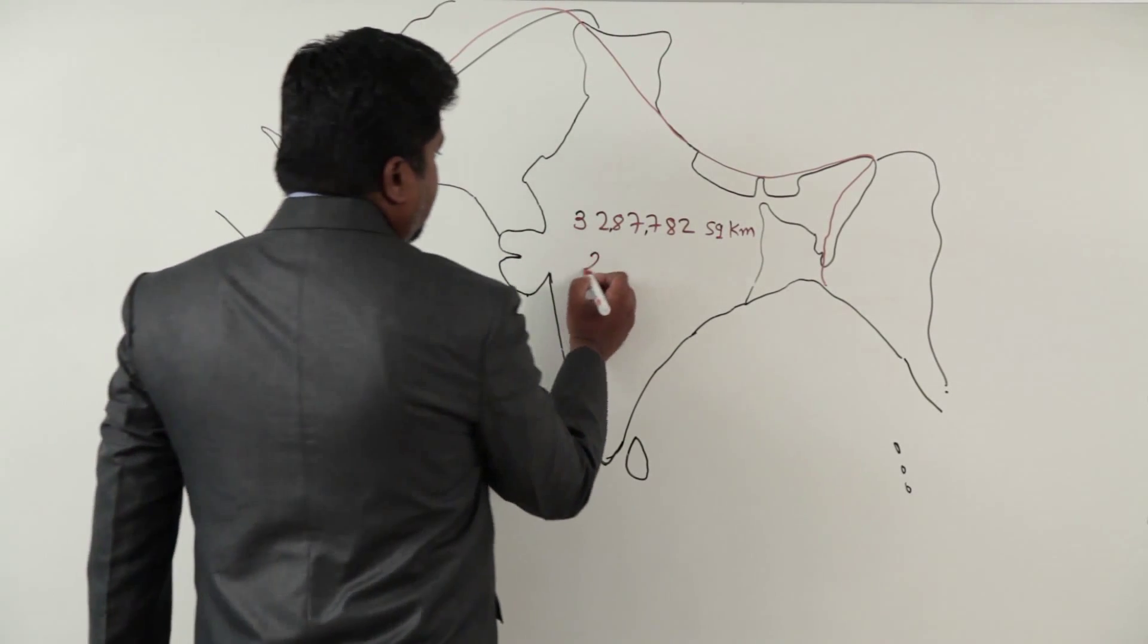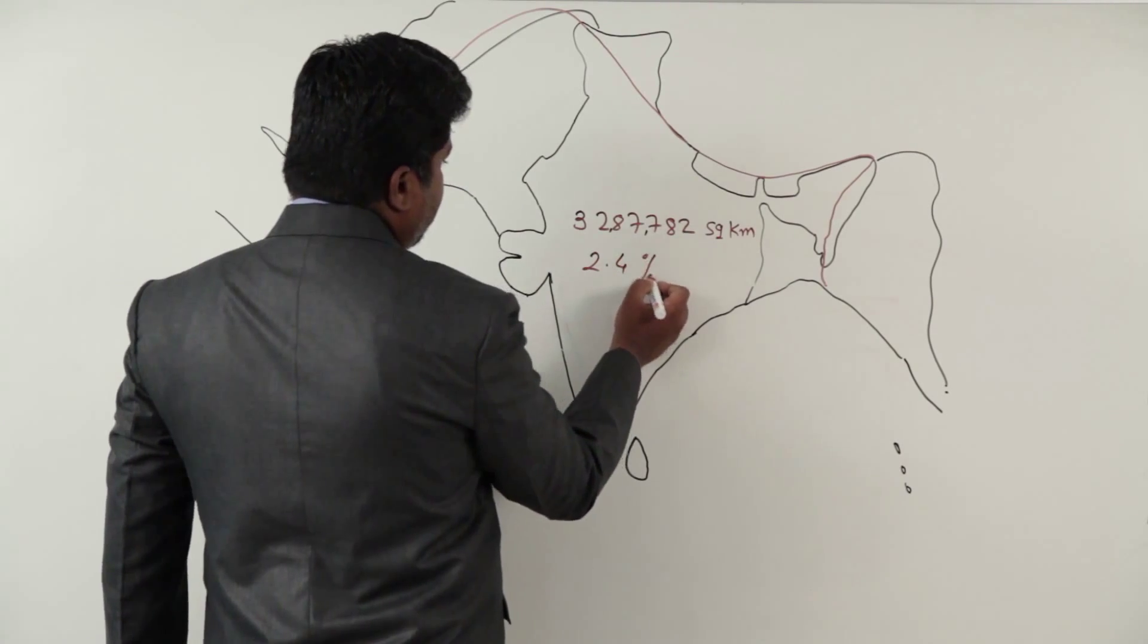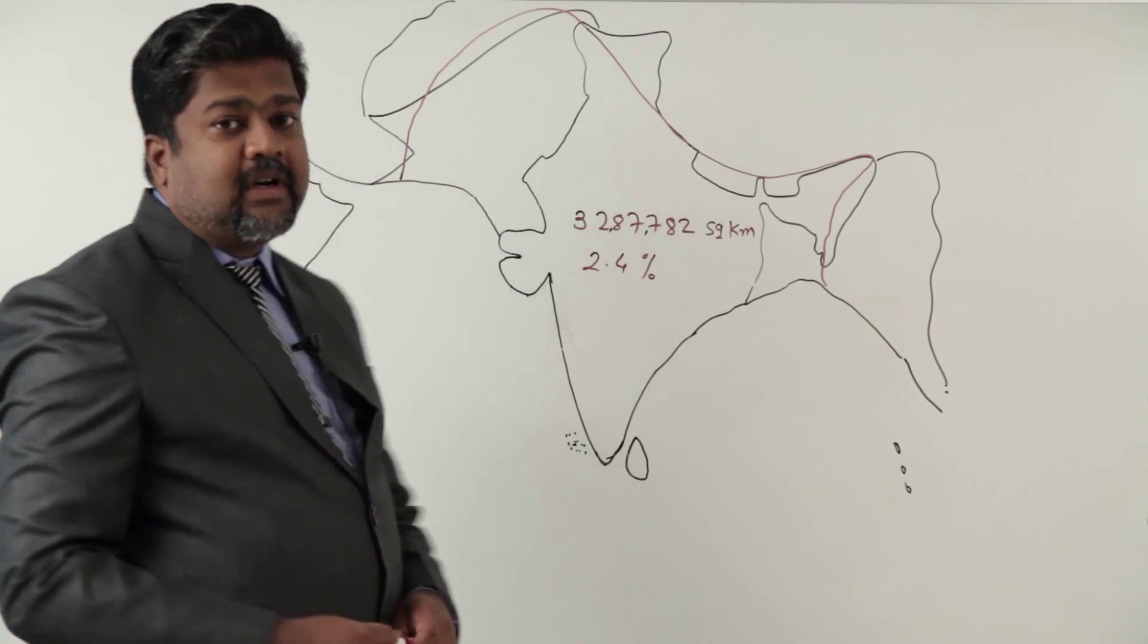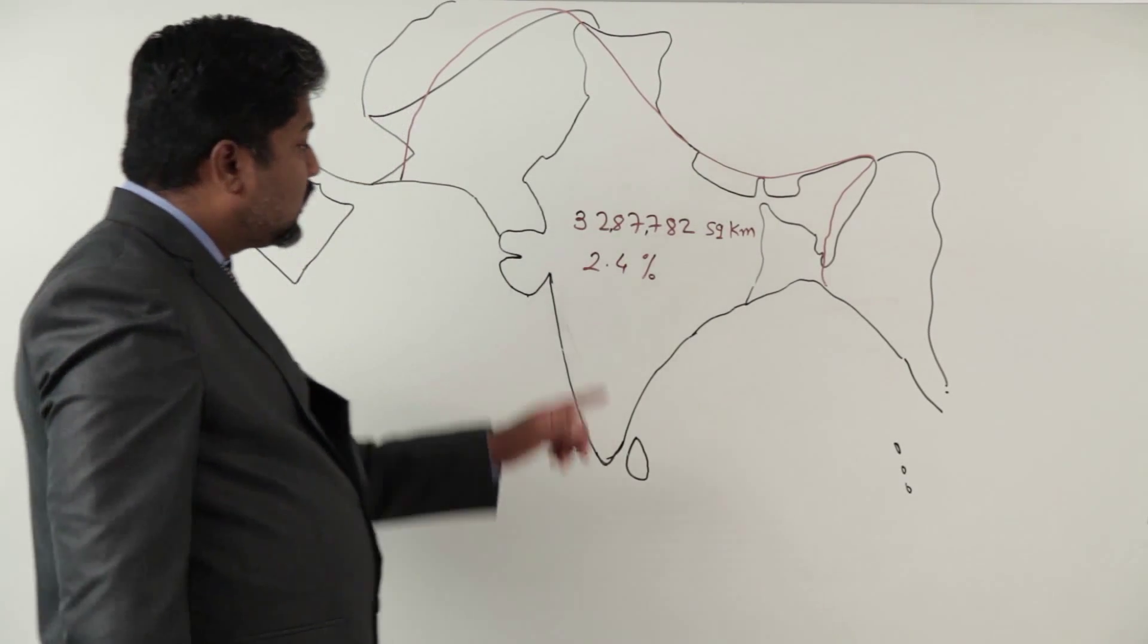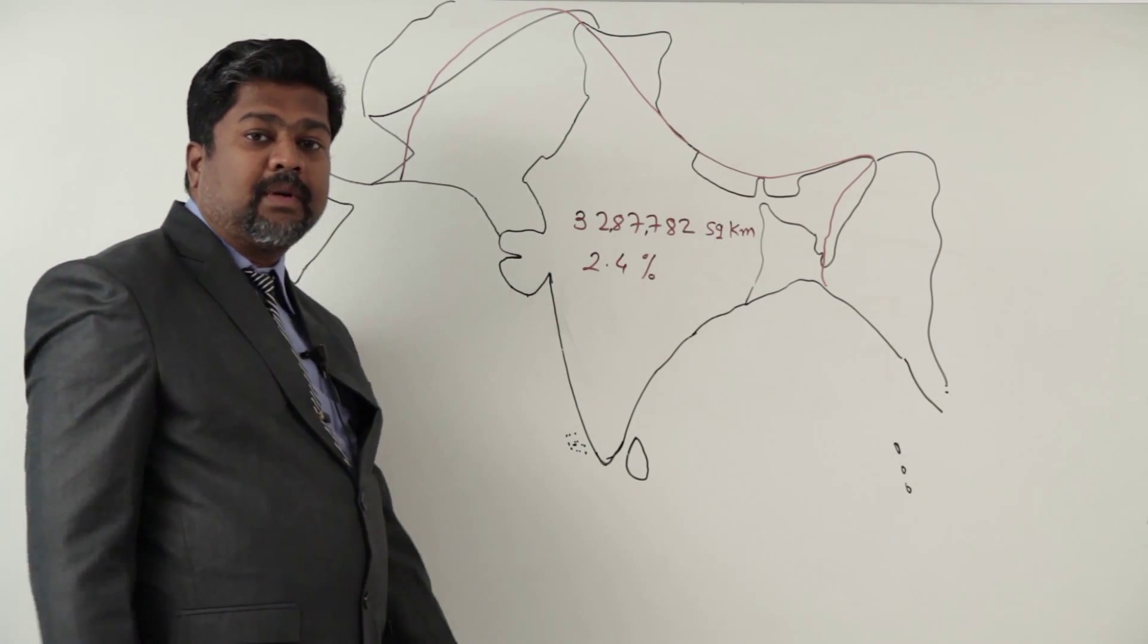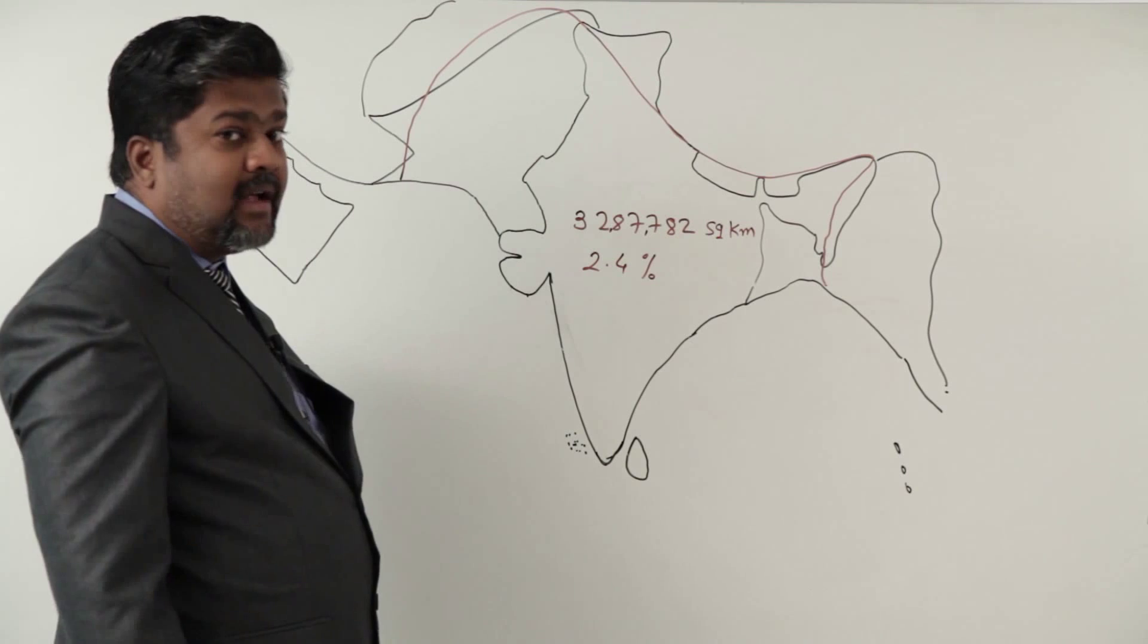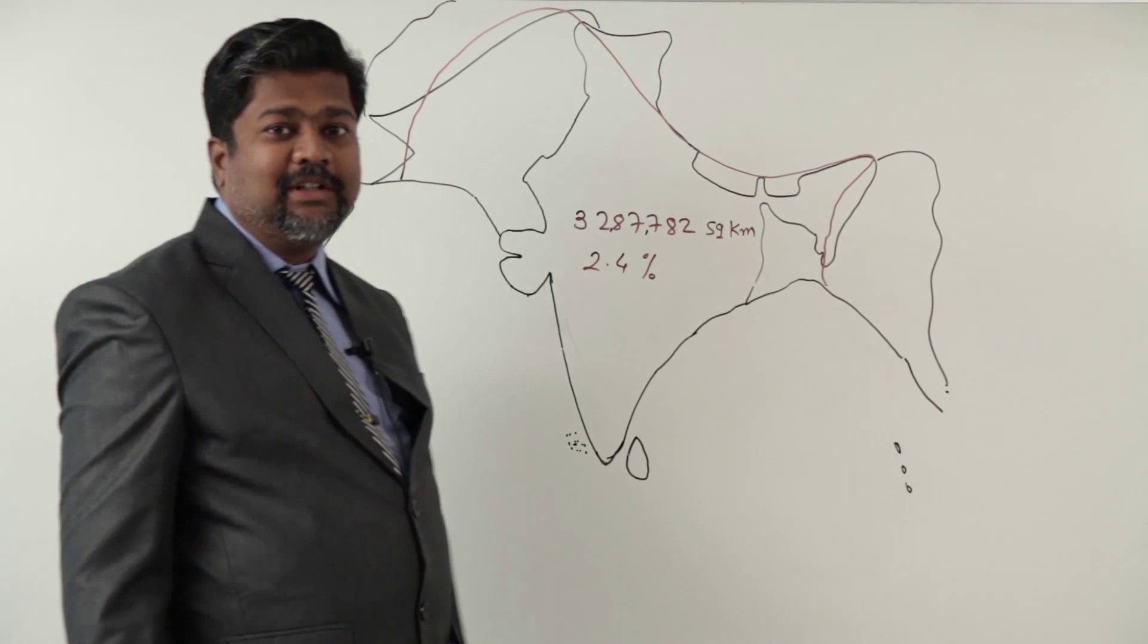I am revising: 32,87,782 square kilometers area is there for India. That accounts for 2.4% of the world's total land, having second largest population in the world.